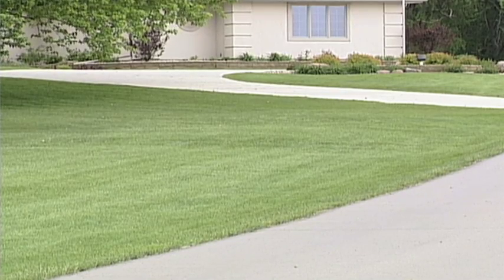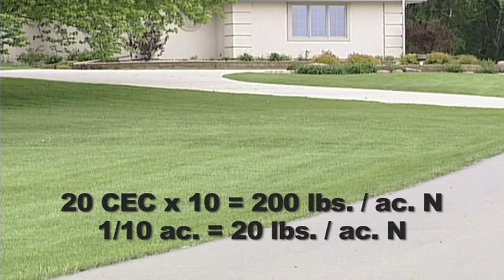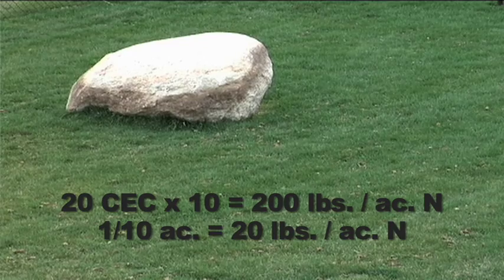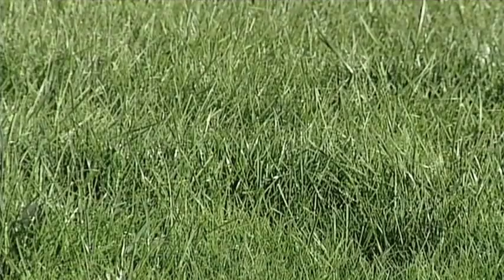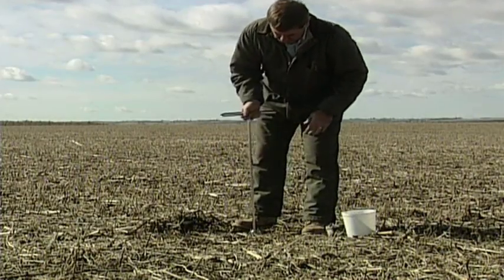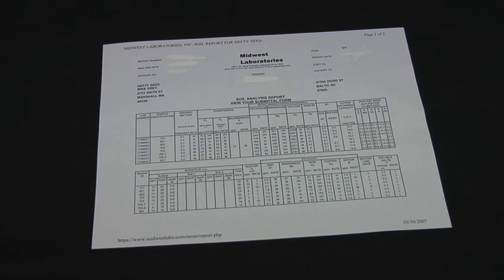The problem is the environment. Take a soil test, get your cation exchange capacity number, multiply it times 10, and that tells you how much nitrogen you can put on a whole acre. An acre is 43,560 square feet, so scale it down for your lawn size. If your CEC is 20, multiplied by 10 is 200 pounds per acre — for one-tenth of an acre, that's 20 pounds of nitrogen. Do some soil sampling and get a complete analysis so you know how many nutrients your soil can actually hold.